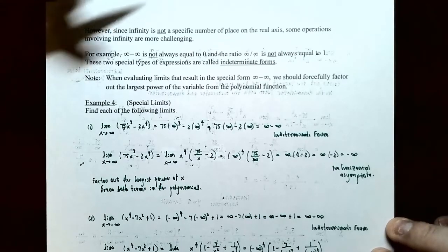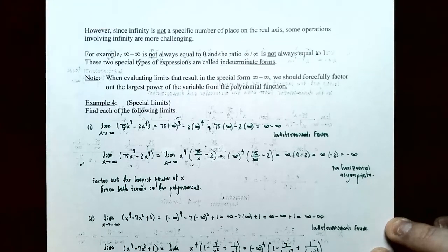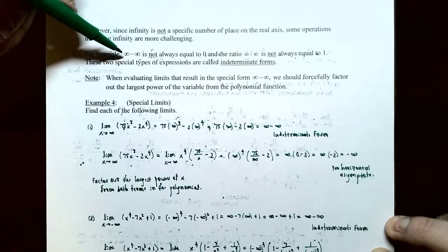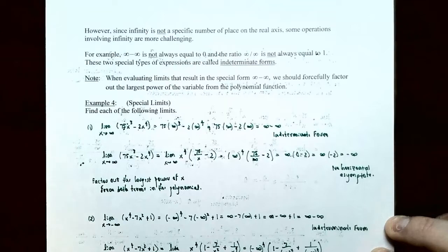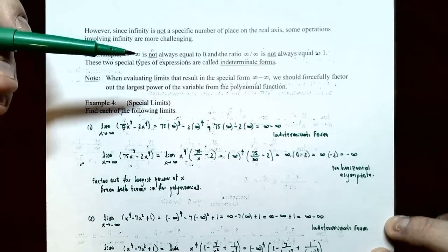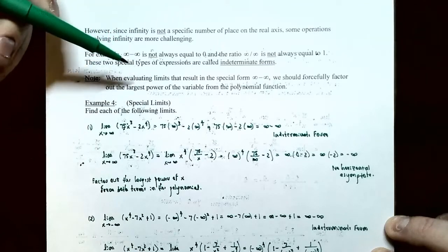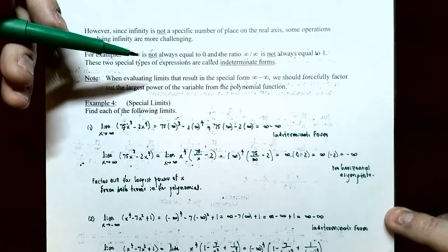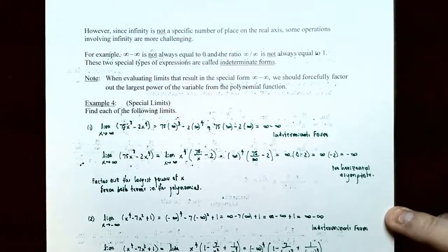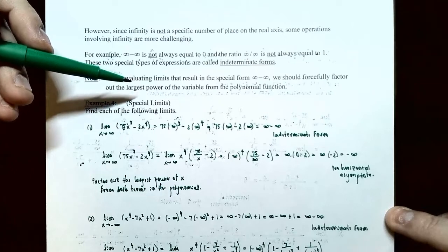Since infinity is not a specific number on the real axis, some operations involving infinity are impossible to determine. For example, infinity subtract infinity is not always zero — you don't know how large each number represented by infinity is. And infinity divided by infinity is not always one for the same reason. These two forms are called indeterminate forms, just like zero divided by zero. So whenever you evaluate limits resulting in infinity subtract infinity, we will forcefully factor out the largest power of the variable in the polynomial.